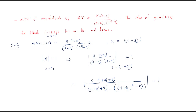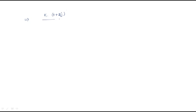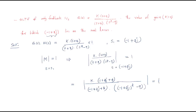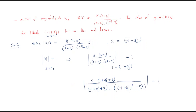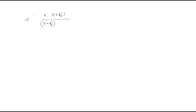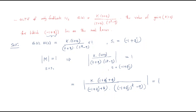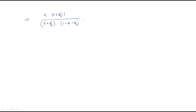For the second denominator term, we compute (minus 1 plus 2j) squared minus 9. Expanding: 1 minus 4 minus 4j minus 9, giving minus 12 minus 4j. So the magnitude equation becomes: magnitude of K(3+2j) divided by [(7+2j)(−12−4j)] equals 1.